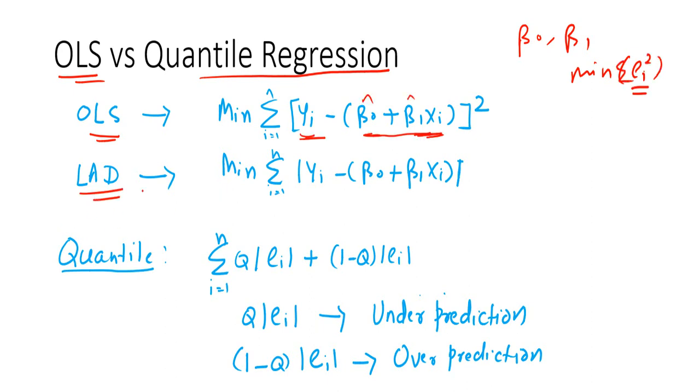What happens in least absolute deviation equation? We replace the square with the modulus. And rest is same. Quantile regression is an extension of the LAD with bit of a change. So we introduce a penalty term Q.